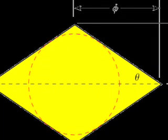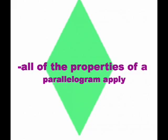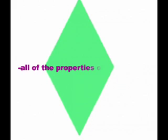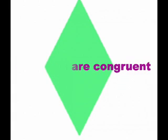Moving on to a rhombus — a rhombus is defined as a parallelogram in which at least two consecutive sides are congruent. In a rhombus, all of the properties of a parallelogram apply, all of the properties of a kite apply, and all sides are congruent.